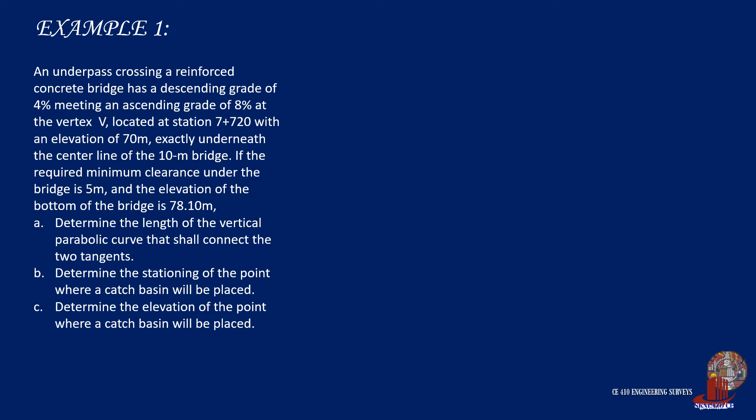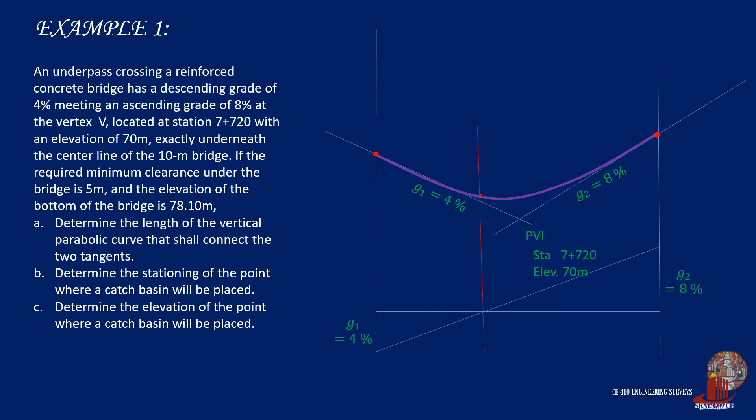By projecting the grades of negative 4% and positive 8%, the intersection is identified at station 7 plus 720 and elevation of 70 meters. By using the grade diagram, we can locate the lowest point where it is identified before half of L. The problem also discusses a bridge situated above the point of vertical intersection. Its centerline coincides with a projection of PVI.